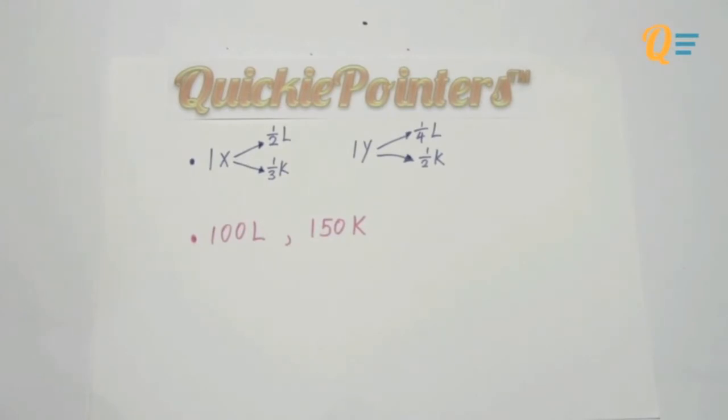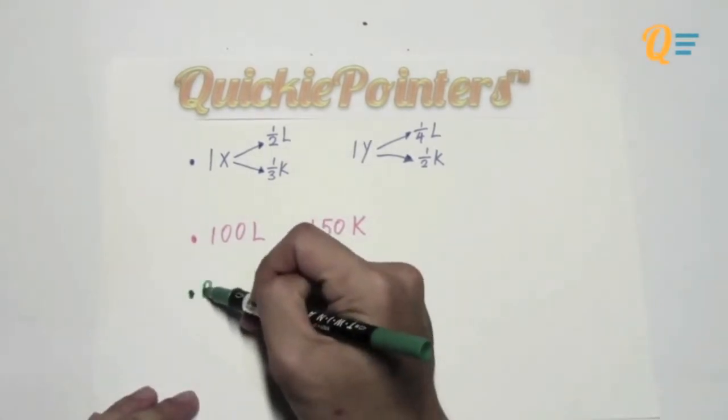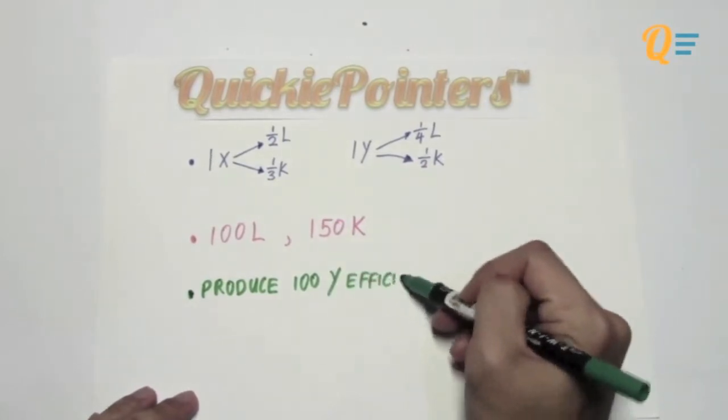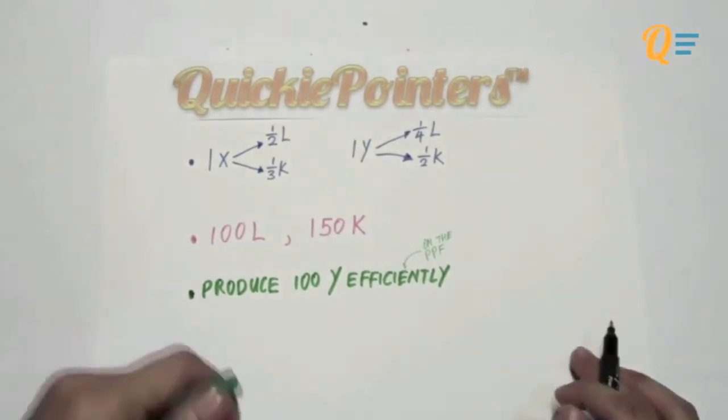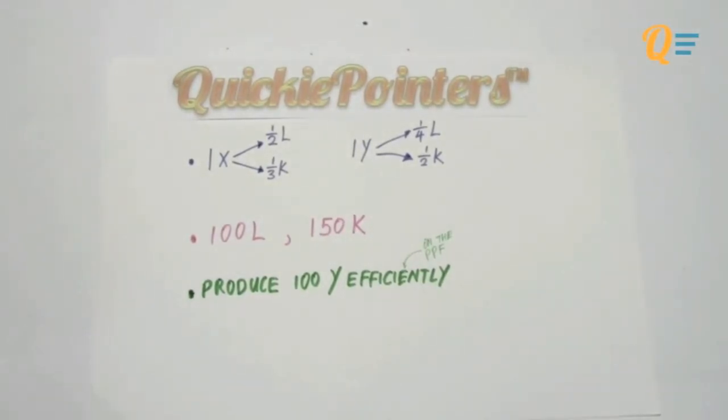And moving on to the next point, we know that Quickie Land is producing 100 units of Y efficiently. What this implies is that Quickie Land is actually on the PPF given the word efficiently. Let's move on to the next point.